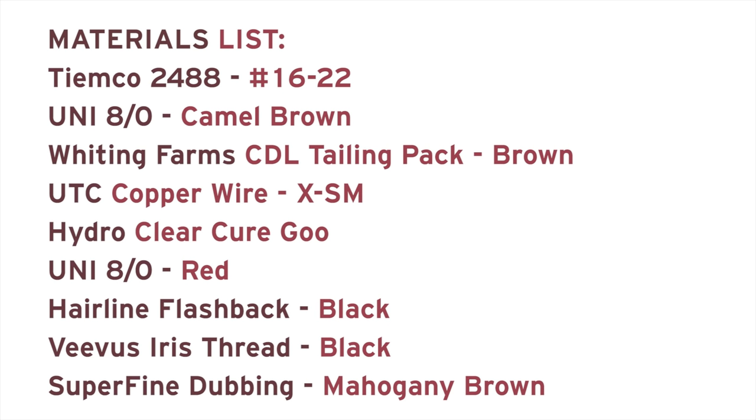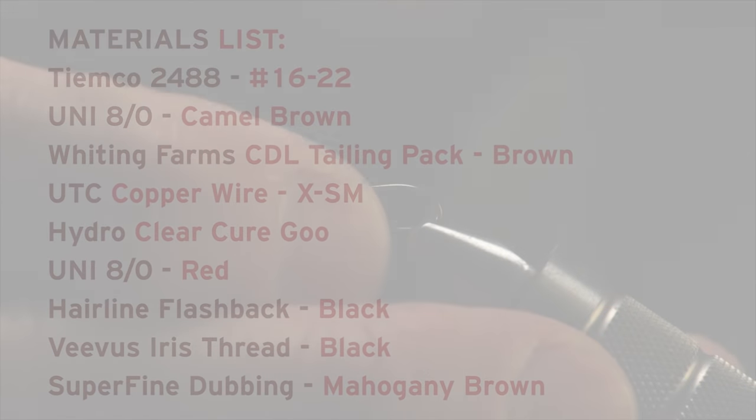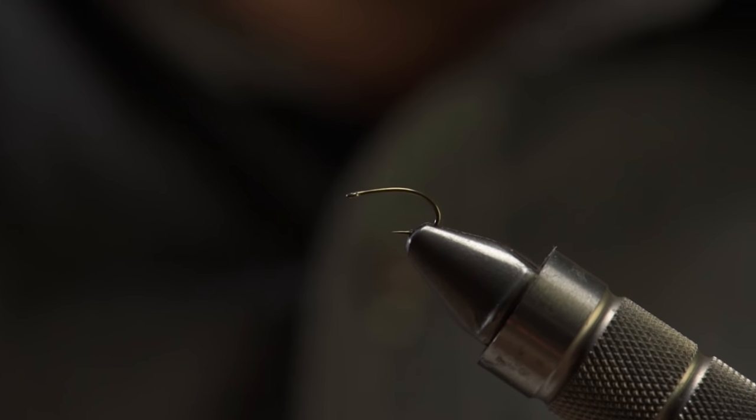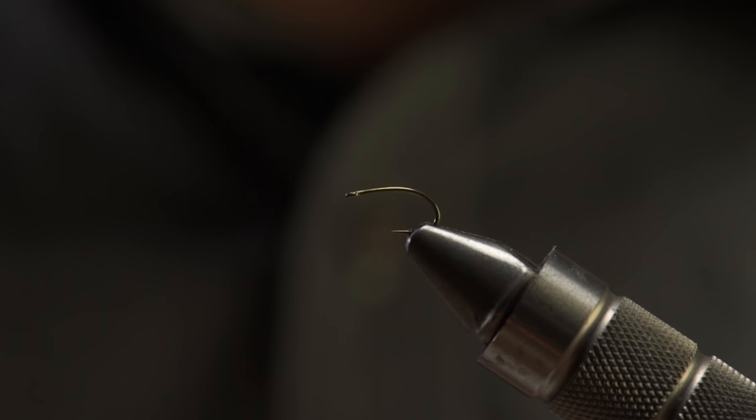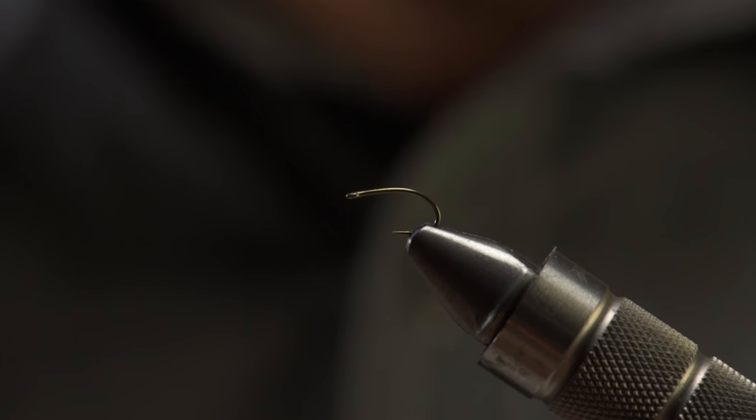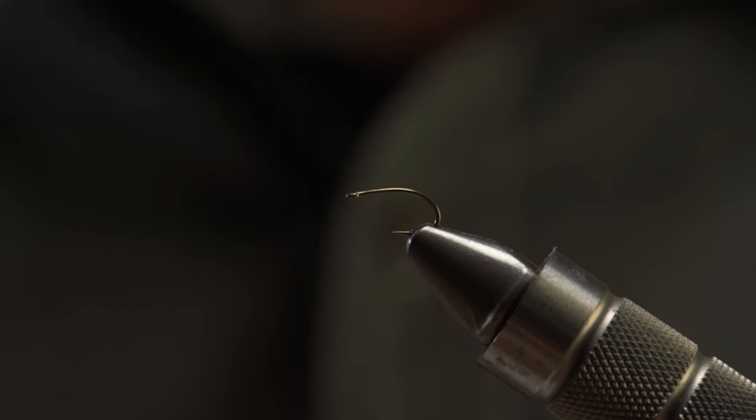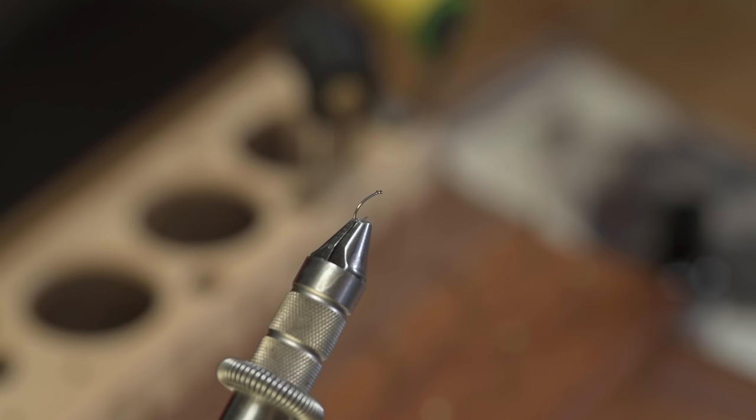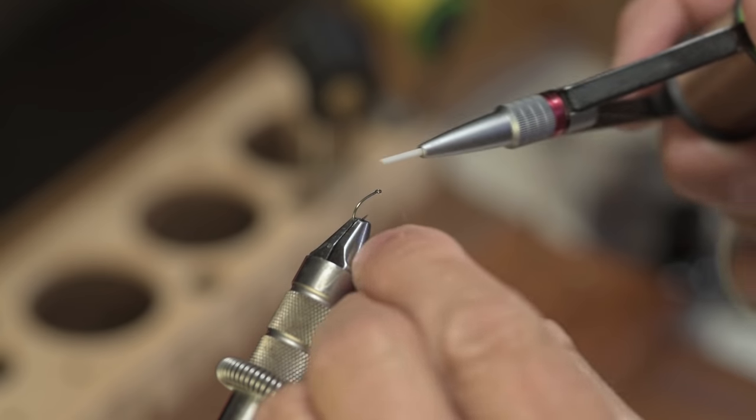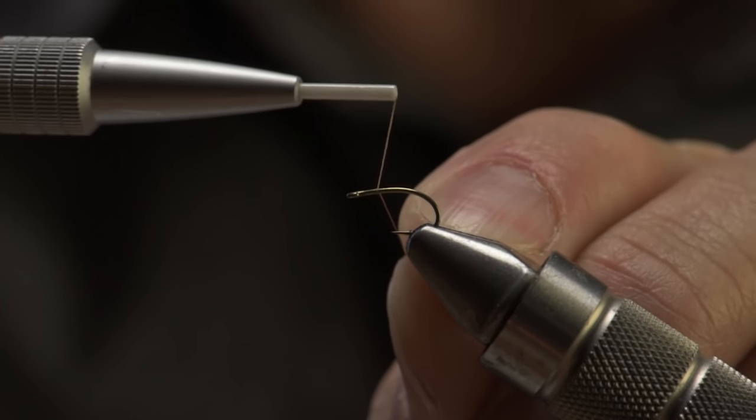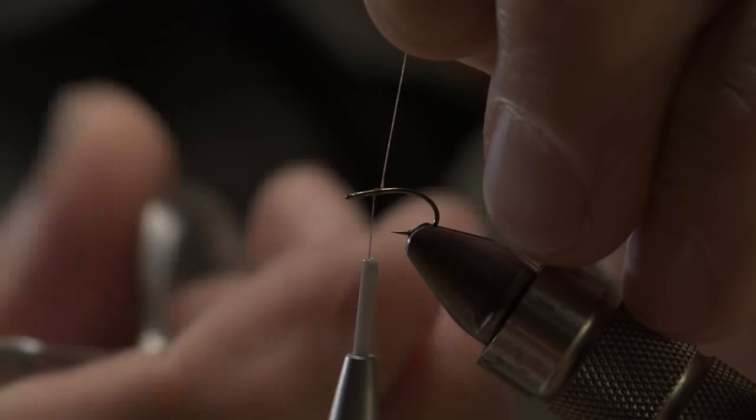The hook we're going to be using tonight is a 2488, a little short-shanked hook. I like putting my hooks in the vise so that I can still see the barb of the hook. It kind of gives me a reference point on where to start and stop my thread many times. The thread we're using tonight is some Uni ADOT, it's camel brown, and then halfway through the fly I'm going to switch to some red ADOT. Start the thread, there's about 50% point, so maybe about 75% on this hook. Do my little jam knot.